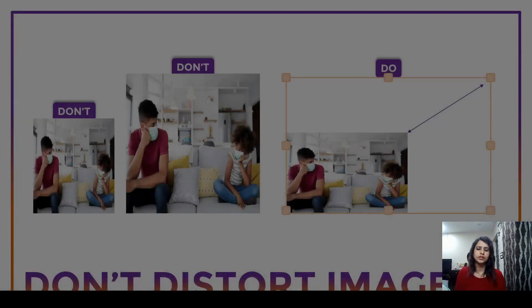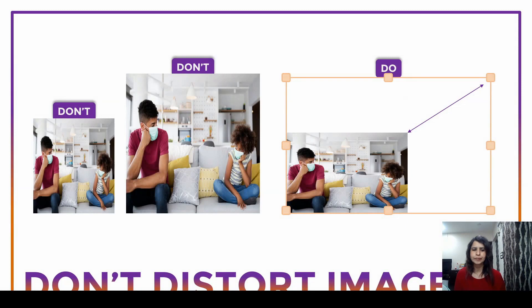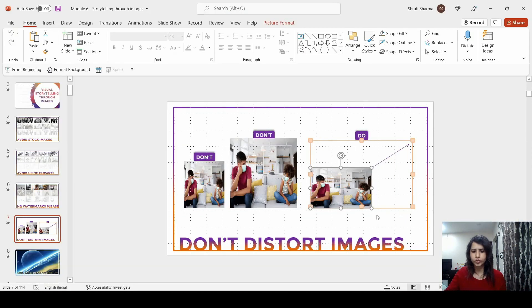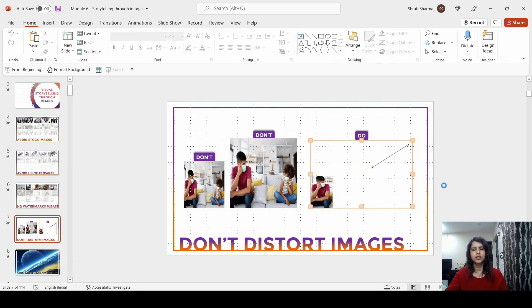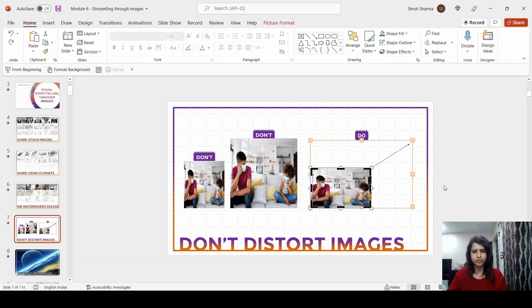I've seen people distort images especially when creating small shapes like circles or squares where you insert an image — in those cases people tend to always distort the image. So even if you have to use a smaller size, use the crop feature. You can crop the area that you don't want. But do not distort the image by compressing it or stretching it from the wrong sides.